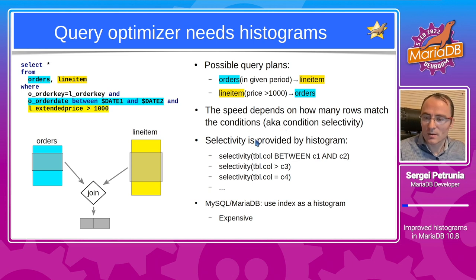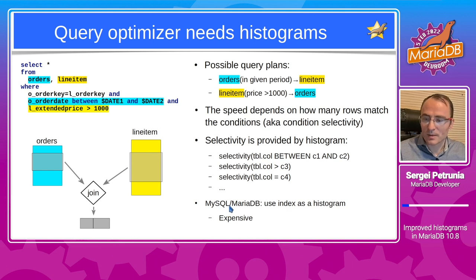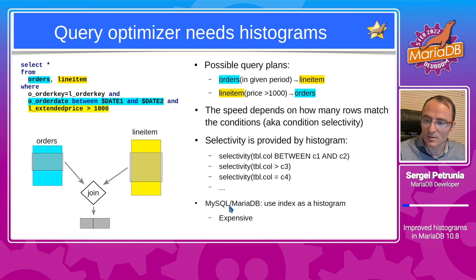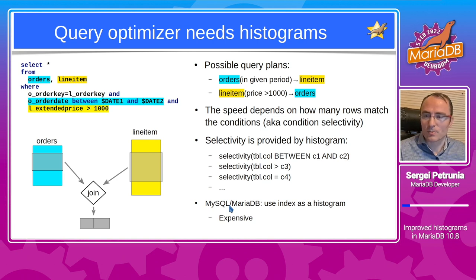Condition selectivity is provided by histograms. Histograms are compact data structures that can answer questions like: what is the expected number of rows that will match this where condition? MariaDB and MySQL query optimizers are unusual in that they can use indexes as really large histograms. However, it's not always possible to have an index every time you need a histogram, and it's expensive, so genuine histograms are needed as well.